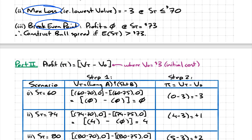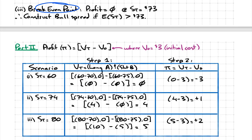The bull spread is a combination of long call A and short call B. We need to enter the intrinsic value of both options. For long positions you have a positive exposure, whereas for a short position you have a negative exposure — that's the only thing to remember.